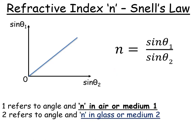First of all, Snell's Law is simply n equals sine theta 1 over sine theta 2. And if you were to plot this as a graph of sine theta 1 on the y-axis and sine theta 2 on the x-axis, you get a nice straight line. The gradient of this line gives you the refractive index. Another thing to remember is that 1 usually refers to the medium in air and 2 usually refers to the medium in glass.